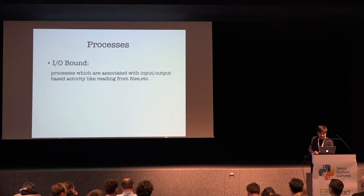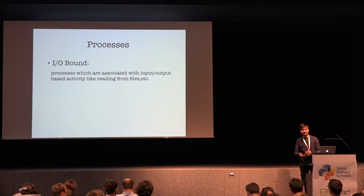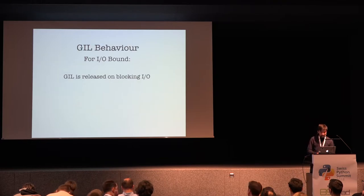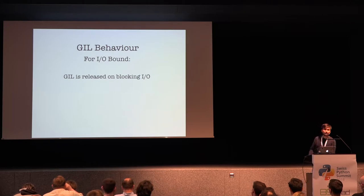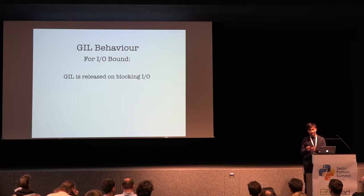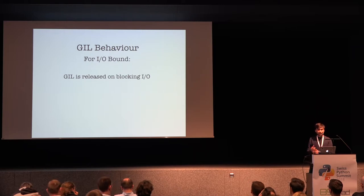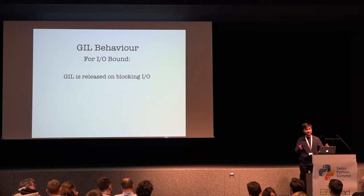Let's define a couple of process types. IO-bound processes are basically processes which spend most of the time doing IO — like sockets, networks, reading from files and so on. CPU-bound processes do most of the arithmetic calculations. For IO-bound threads, the GIL is released on blocking IO. For example, using the requests library to fetch google.com — you send the request but the response is not instantaneous, so you wait. At that point the GIL is released. When the response comes, the thread grabs the GIL again. So you can have hundreds of threads waiting together, and that's how IO-bound processes benefit from multi-threading in Python.